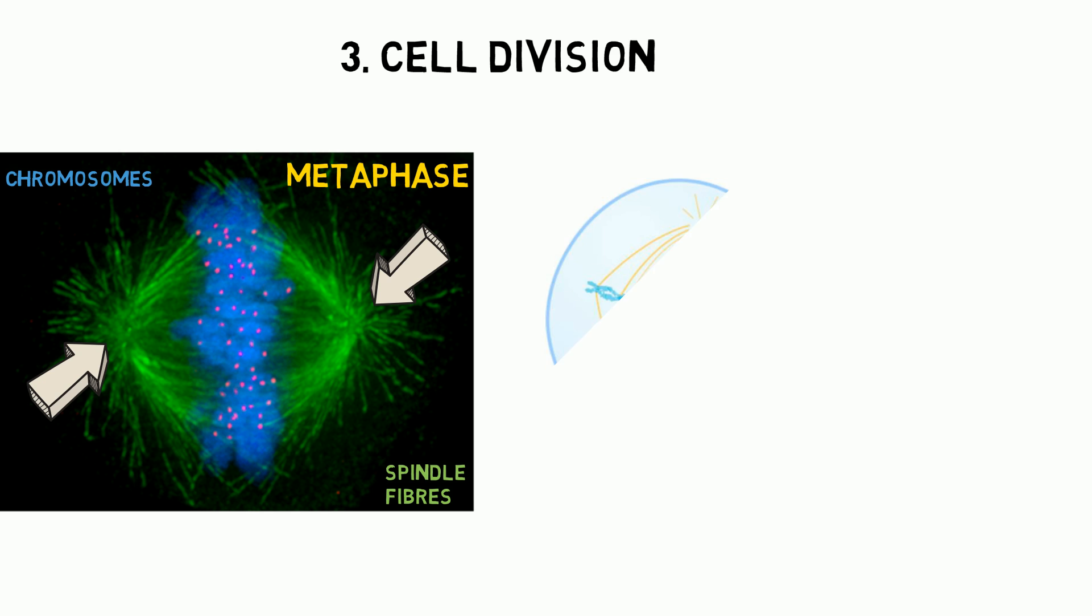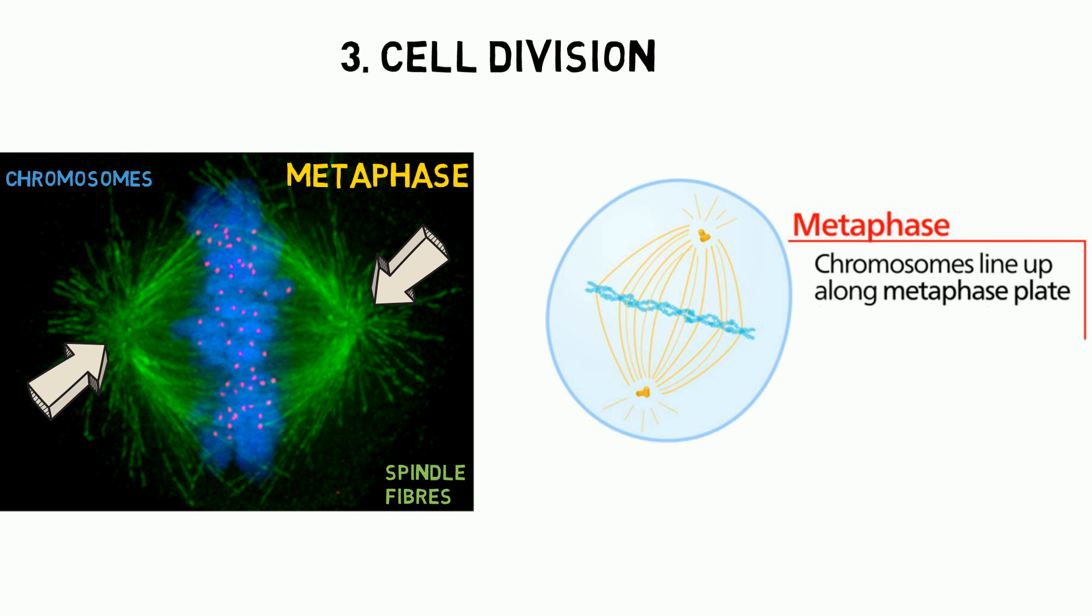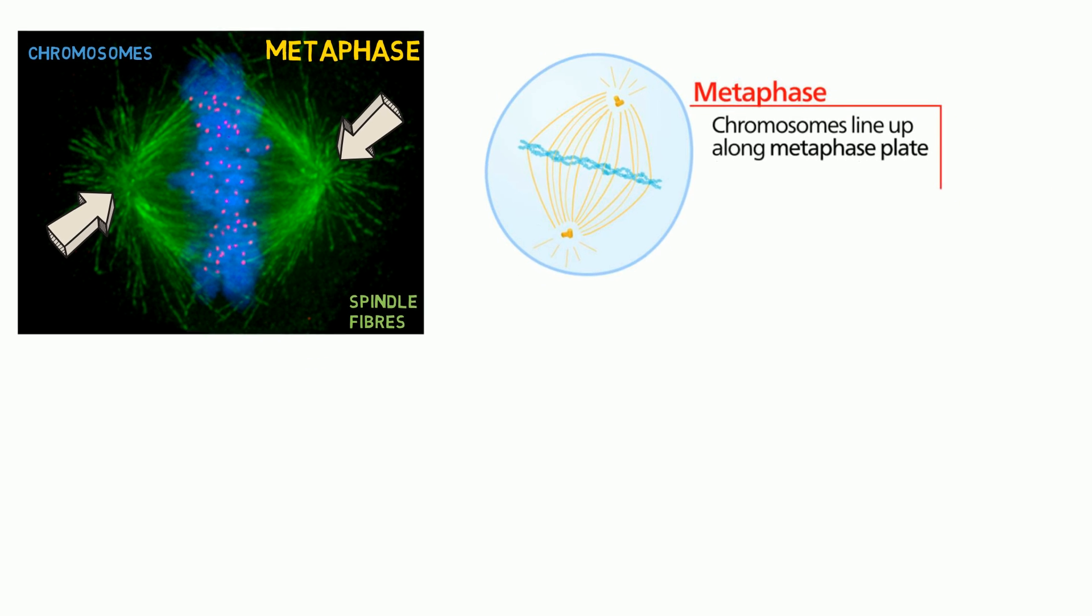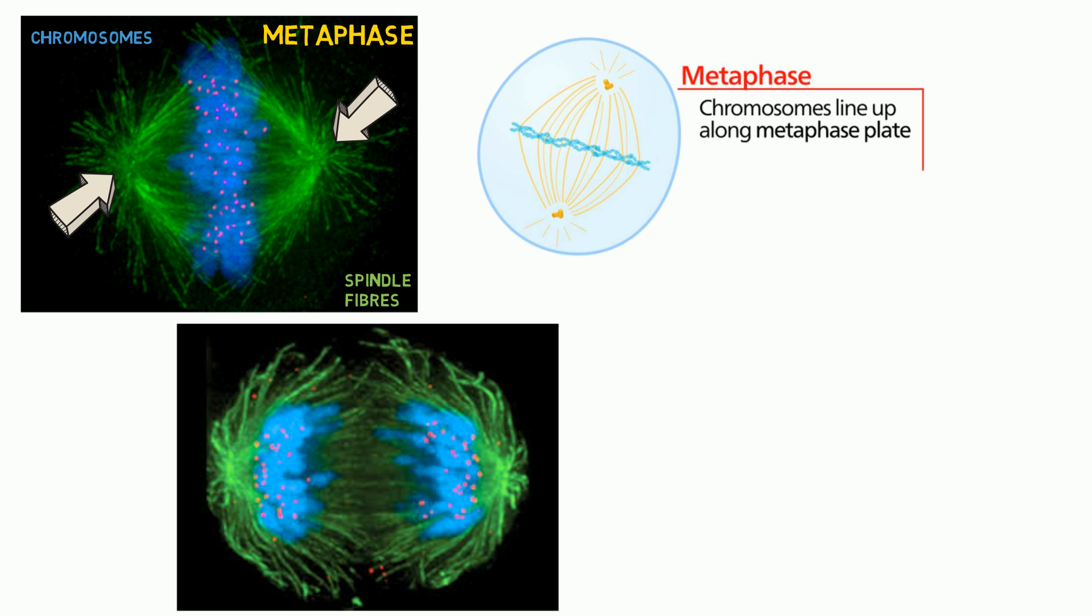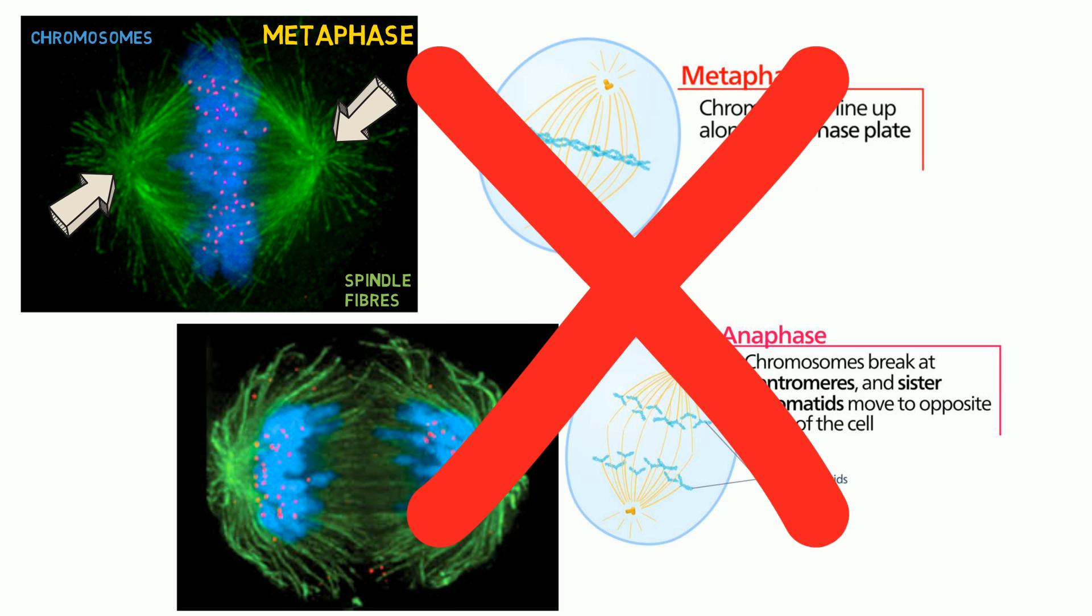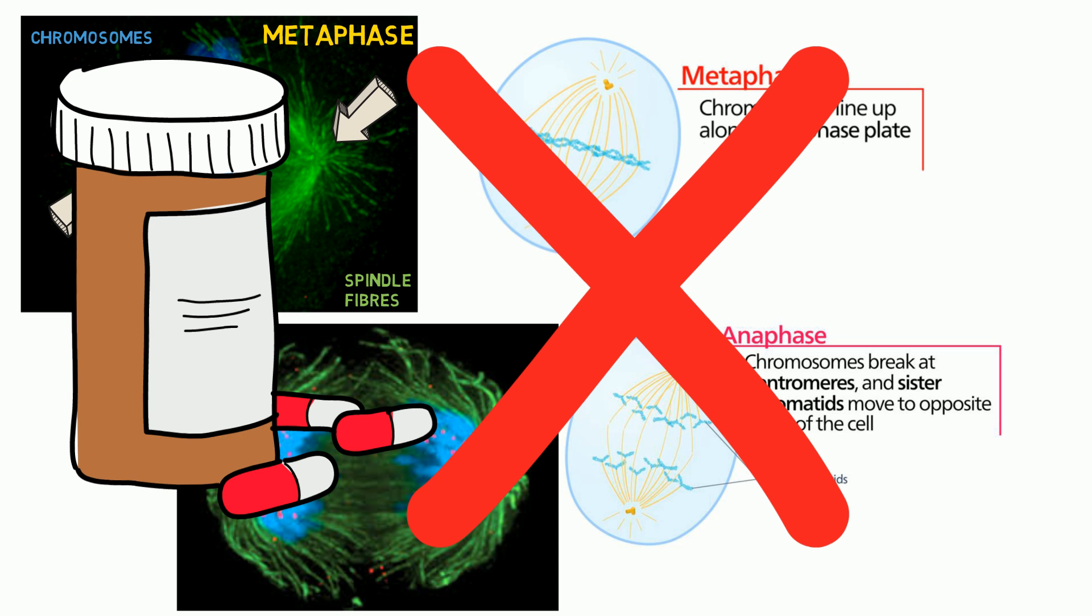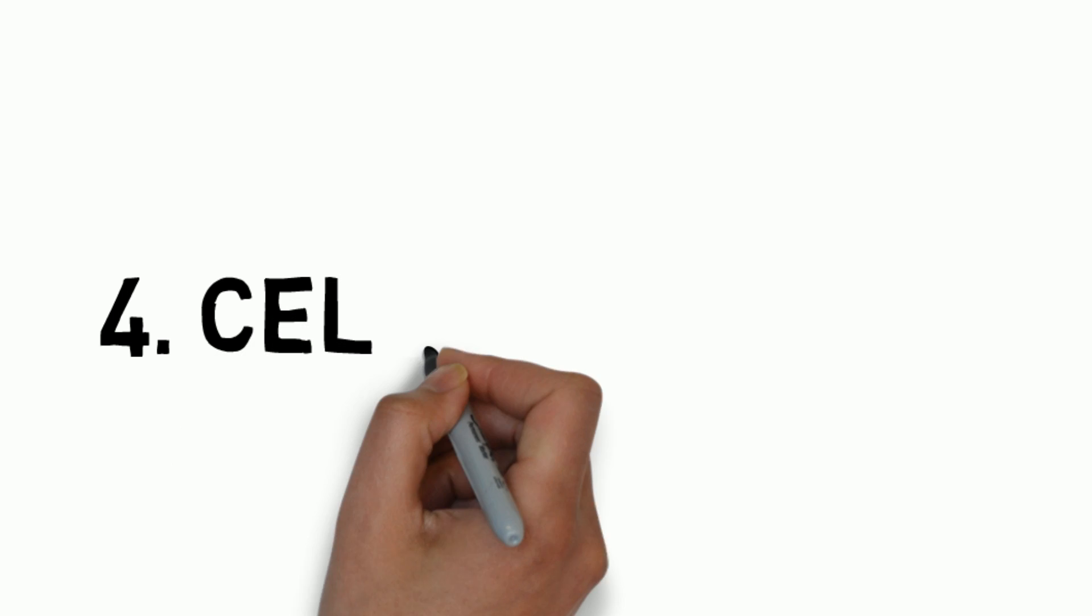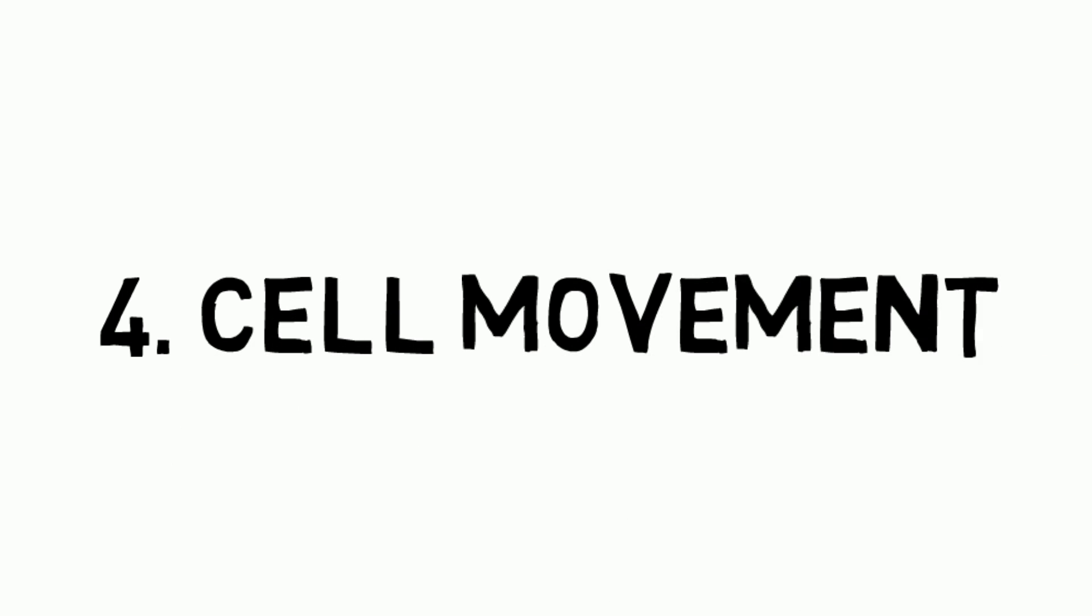The cluster of microtubules growing out of the centrosome is called spindle fibers, which help to align the chromosomes during metaphase and pull the sister chromatids apart during anaphase. Targeting and disrupting the microtubules would therefore inhibit cell division, which is the mechanism of action for many anti-cancer drugs. The fourth function of microtubules is cell movement.